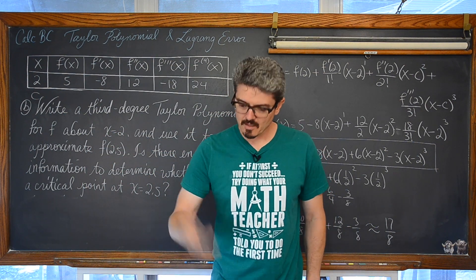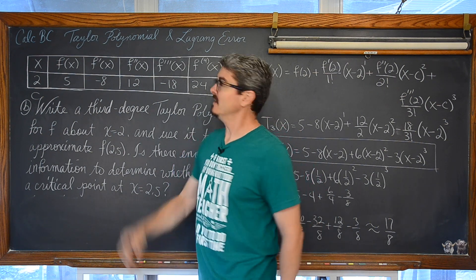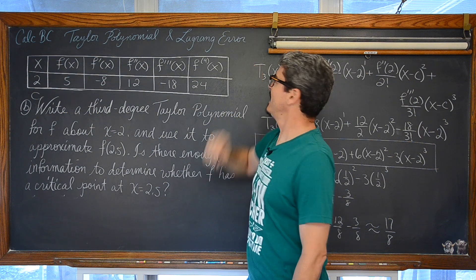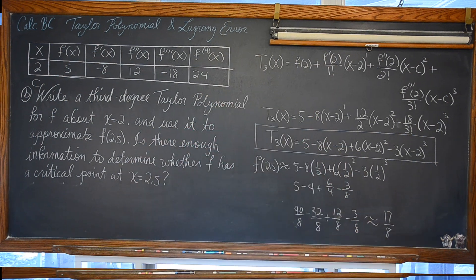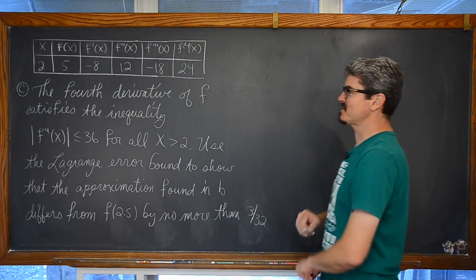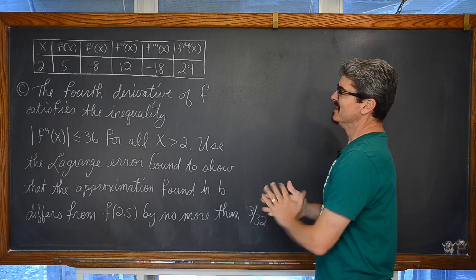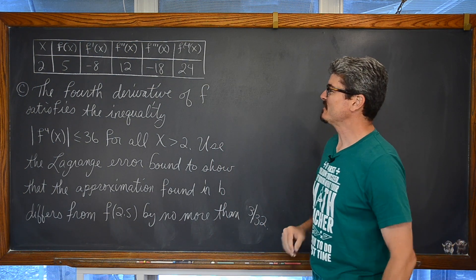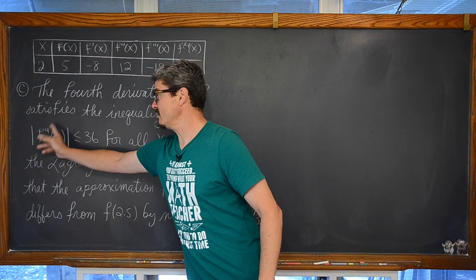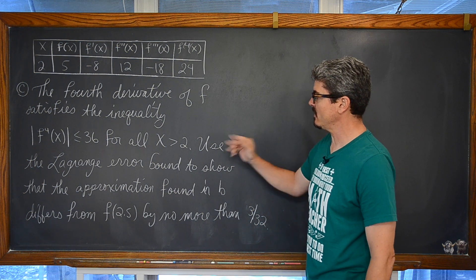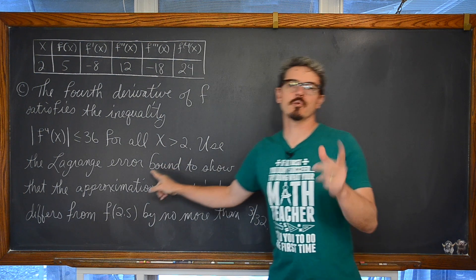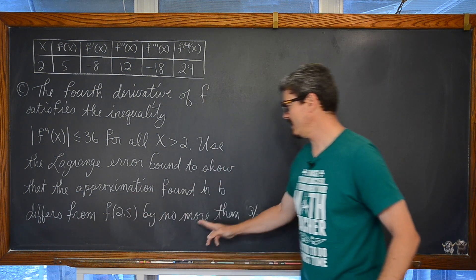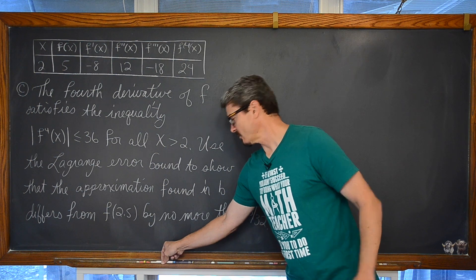Let's get on to Part C, which involves the Lagrange error bound — the upper bound of that error. The 4th derivative of f satisfies the inequality that the absolute value of the 4th derivative of f is less than or equal to 36 for all x greater than 2. Use the Lagrange error bound to show that the approximation found in Part B differs from f by no more than 3 over 32.